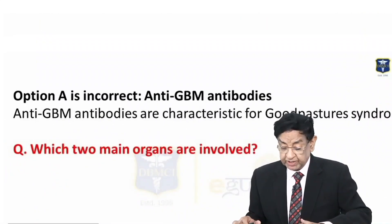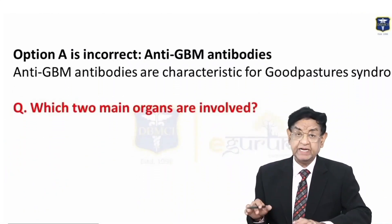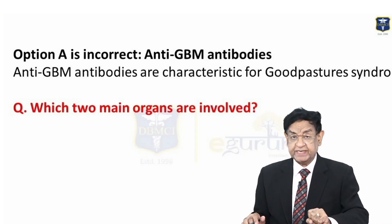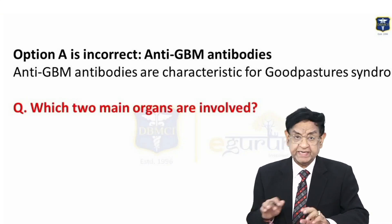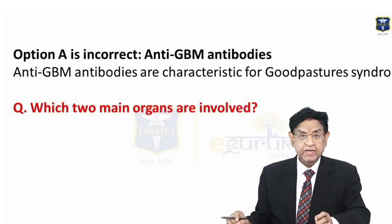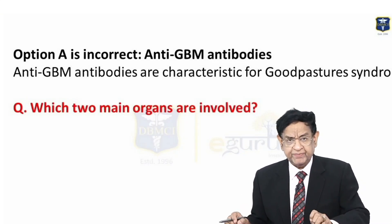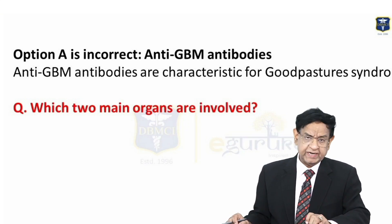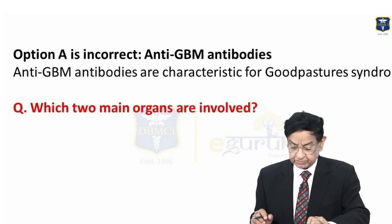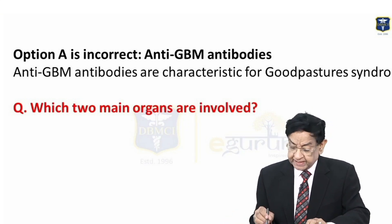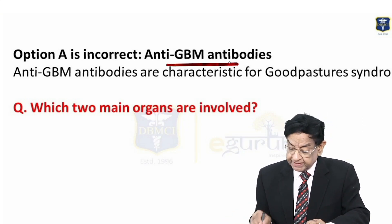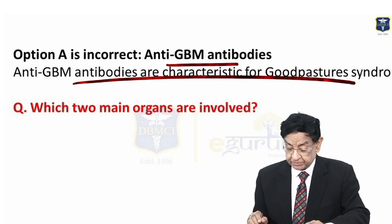We have understood that the alternate pathway is activated in dense deposit disease. Let's look at the other options. Anti-GBM antibody — this is seen in Goodpasture syndrome.